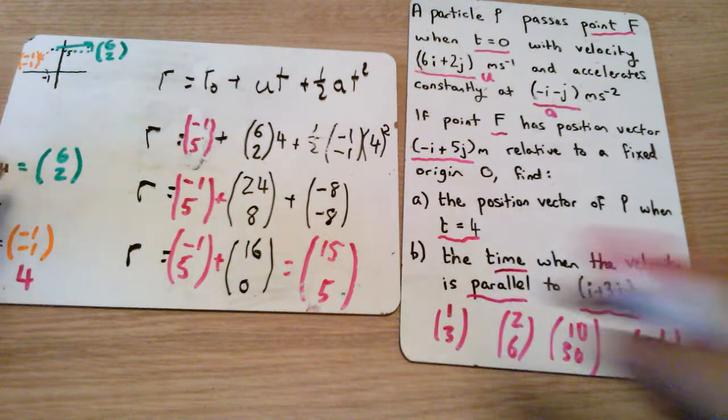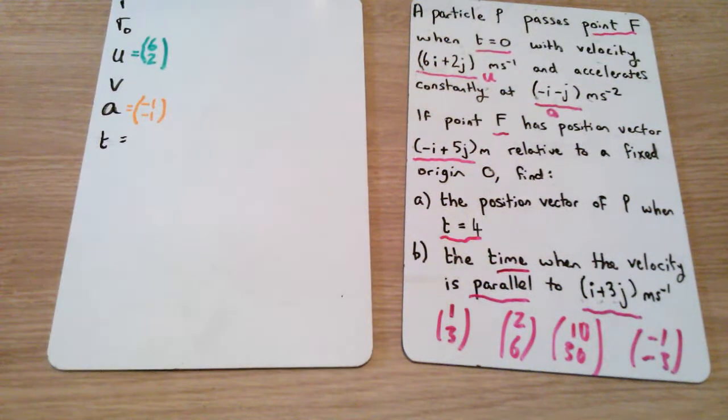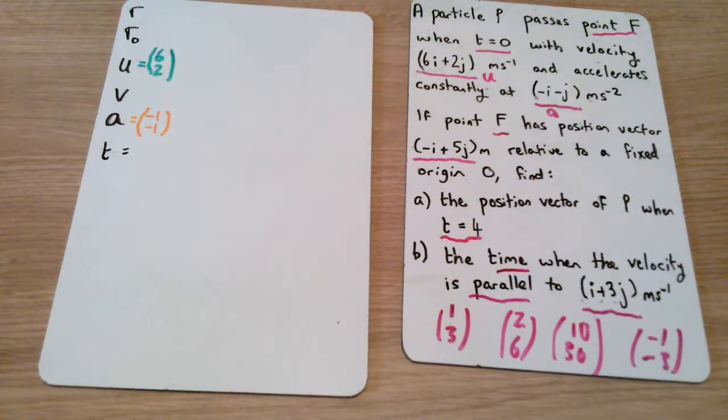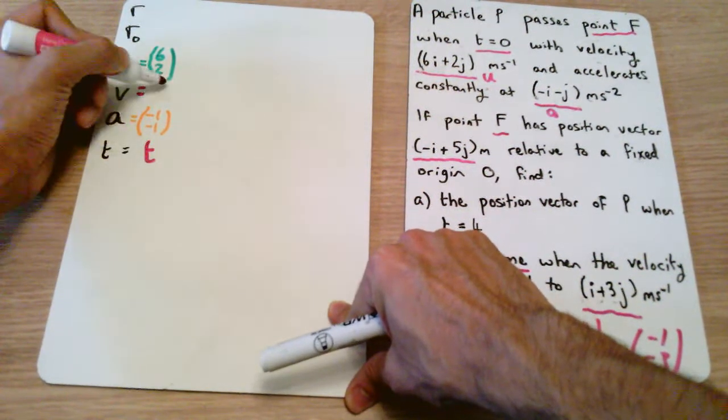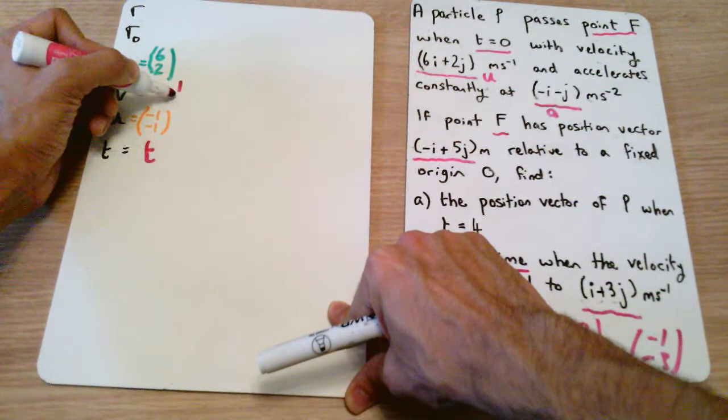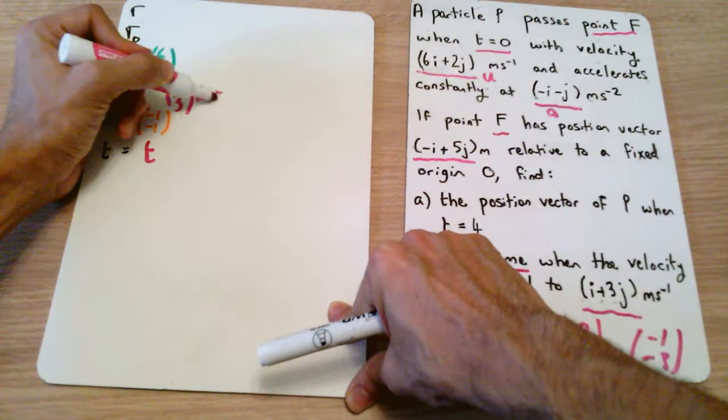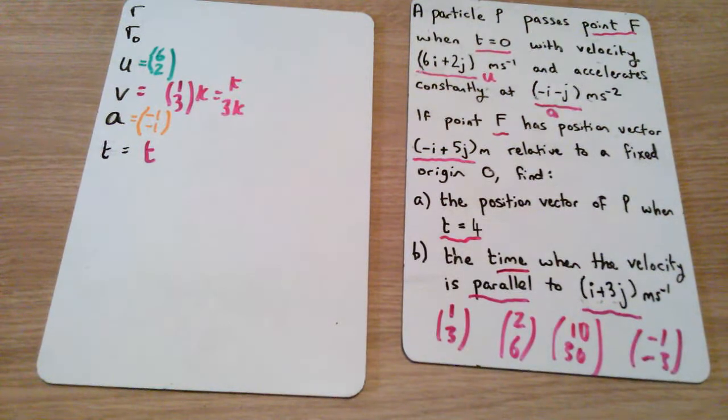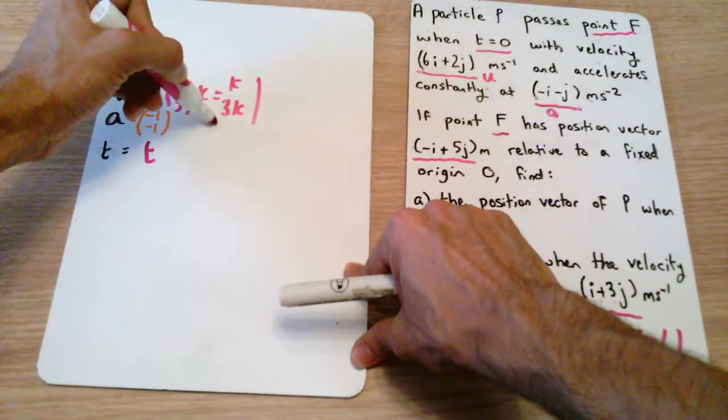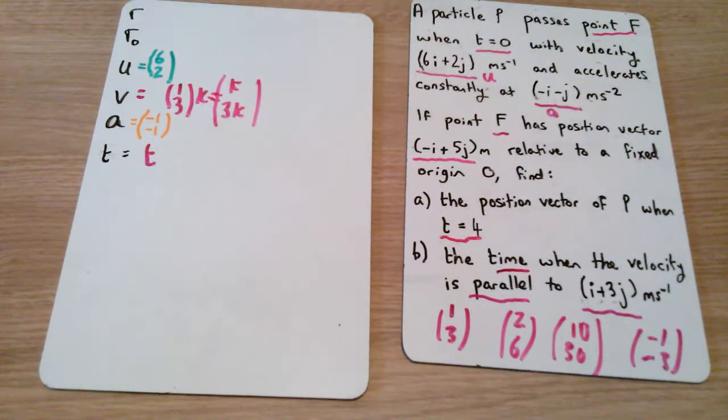But the problem is we don't know which of these values is correct. So if you're parallel, you must have a scale factor. We know that we are trying to find the time when the velocity is parallel to i plus 3j. So we're trying to work out the value of t. And we are trying to work out a vector parallel to i plus 3j. So I'm going to put this as 1, 3, but multiplied by some scale factor k, which is equal to k and 3k.